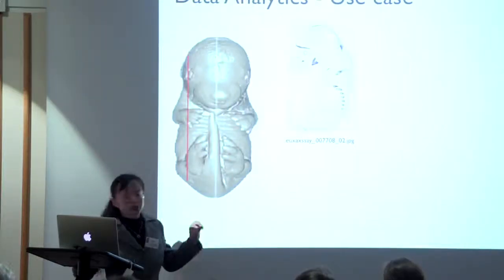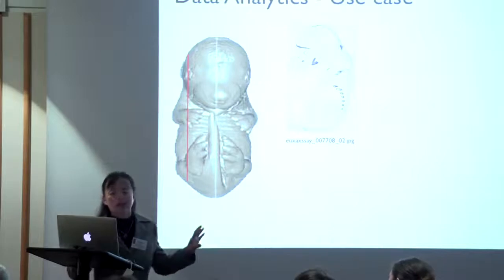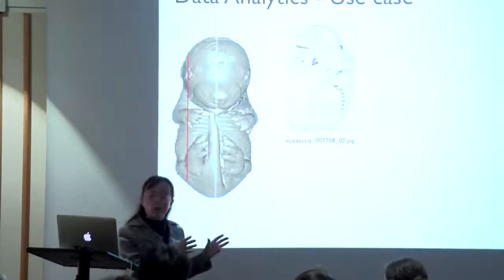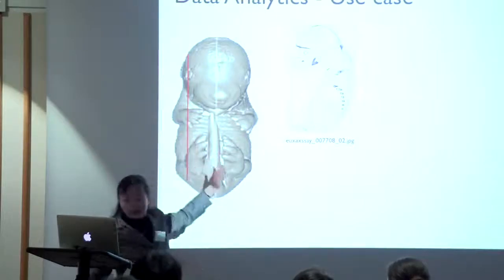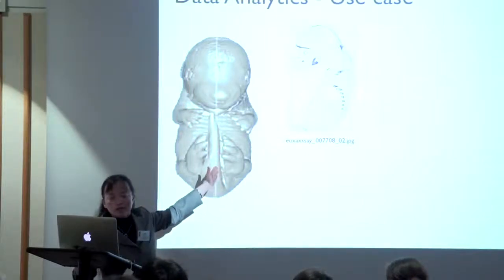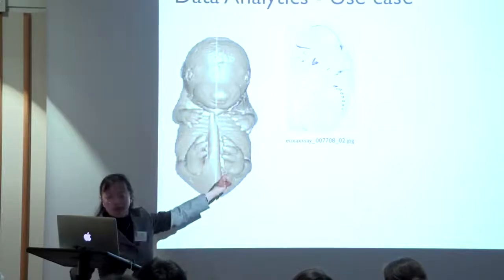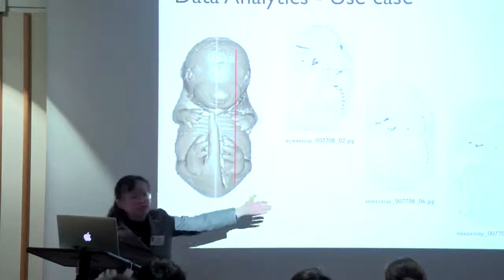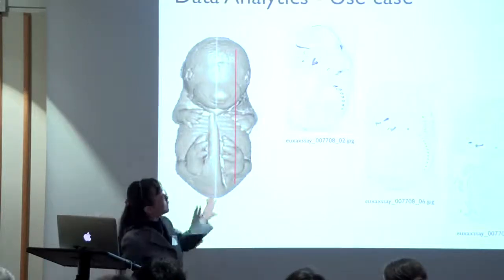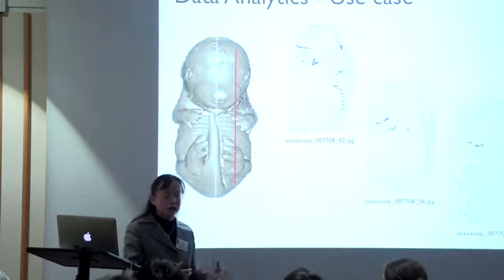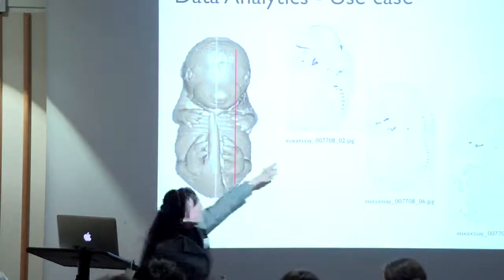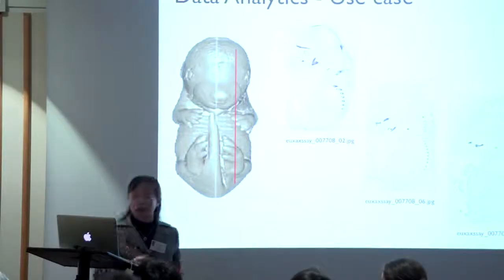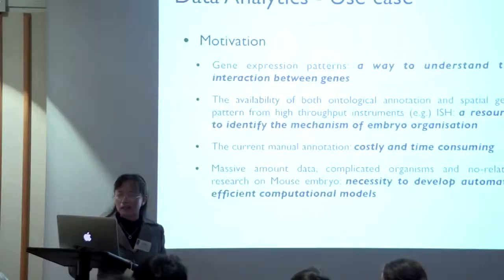Let me show you how these images are acquired. This is a mouse embryo — they slice the embryo and take a picture, then take pictures at different positions. The task is: given this picture, can you automatically annotate the gene? For example, here — RIP — can you automatically annotate this using a machine learning algorithm? That is our task.